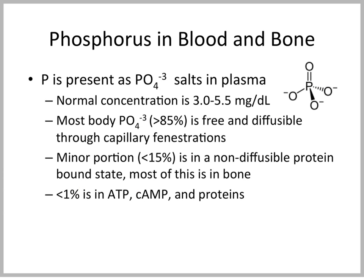What about phosphate? Phosphorus is present in phosphate salts, PO4³⁻, in plasma. Most of it is free and diffusable, and only a small percent is non-diffusable, most of which is in bone. Less than 1% is particularly important because of its role in energy stores through ATP, through the second messenger signaling cyclic AMP, and in phosphorylated proteins within the cell.